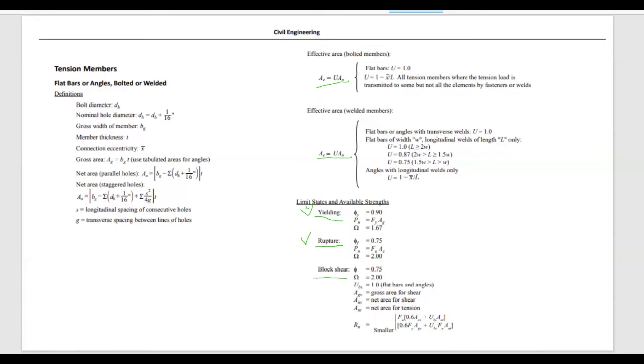And there are a lot of conditions here. U is the shear lag factor, which for bolted members, flat bars, U equals 1. And for angles, you have the formula here. Same on the welded members, flat bars or angles with transverse welds, U equals 1.